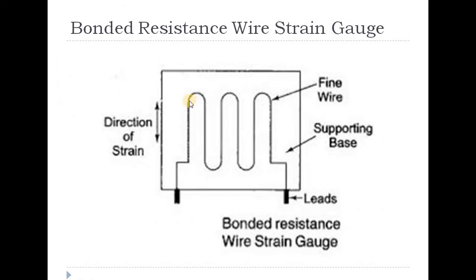One single wire does not give uniform distribution, so a supporting base is used. There is a Teflon coating on the sheet, a resistance wire on the sheet, and a laminator coating over the top — these are the three layers of the bonded resistance wire strain gauge.